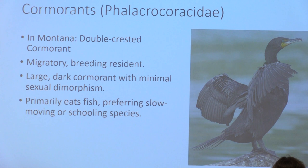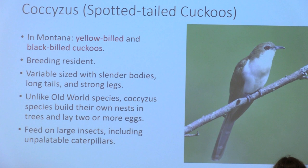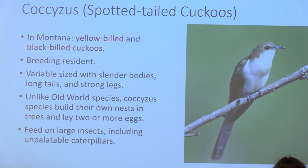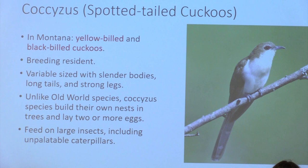Montana has two cuckoo species: the yellow-billed and black-billed cuckoo, both breeding residents. They tend to be slender-bodied with long tails and strong legs. Unlike old world cuckoos, these species are not brood parasites — they raise their own young. Their niche is large insects, especially unpalatable caterpillars that other birds won't eat. Their beak is narrow and curved but also powerful, indicating they eat larger insects, consistent with their body size.